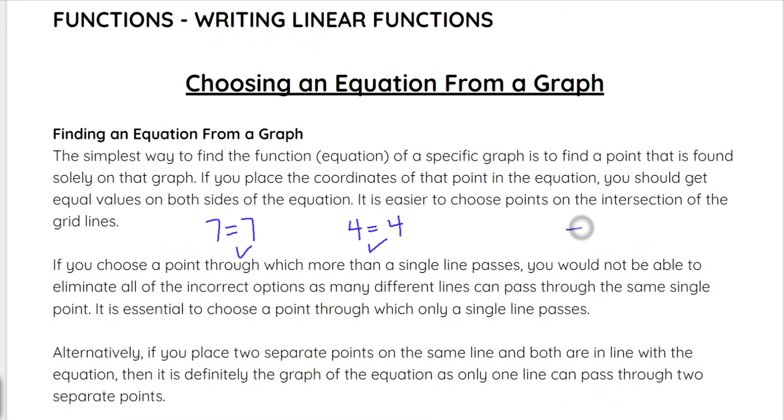Whereas if you end up with something that is not true, like negative 1 equals 6, that would tell us that that point is not on that line represented by that equation.